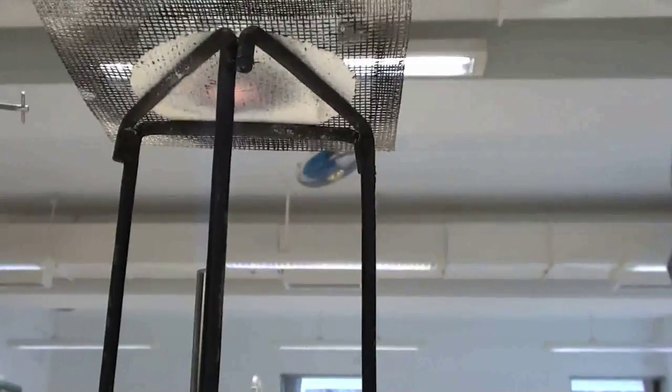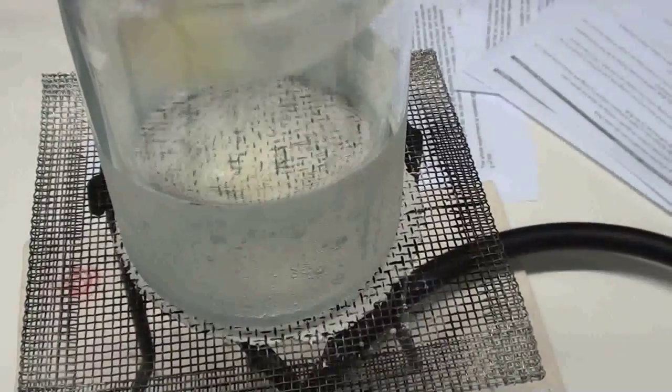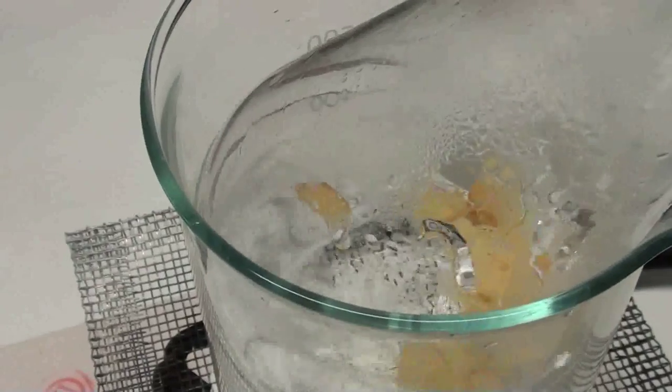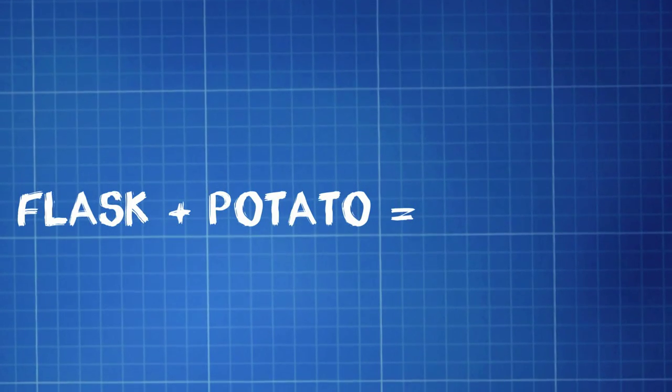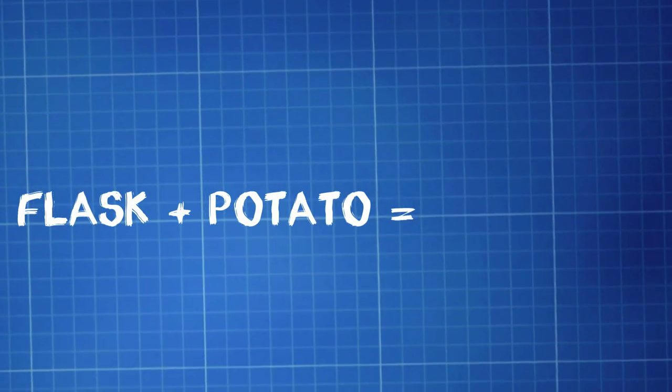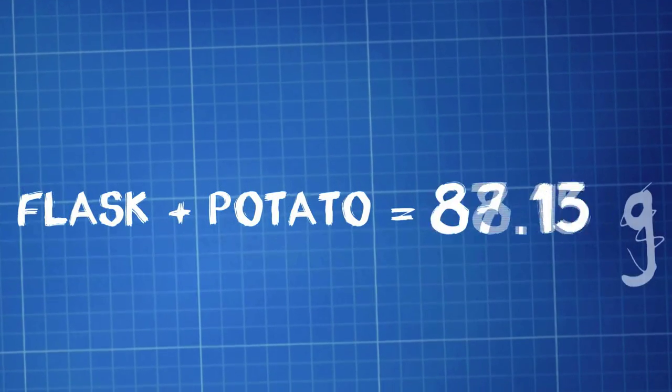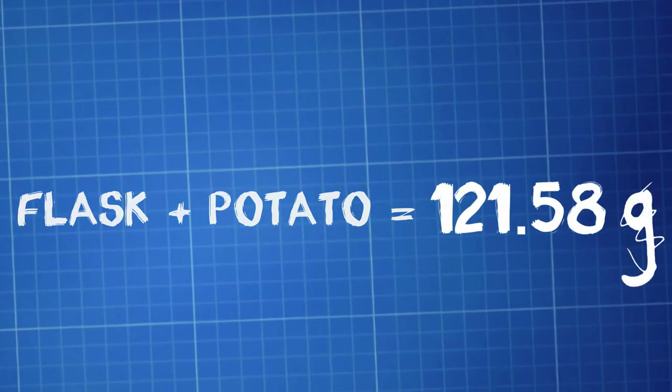Now a water bath is set up. The high temperature will evaporate all hexane. After five minutes, the flask is removed from the water bath and any drop of water from its surface is cleaned.